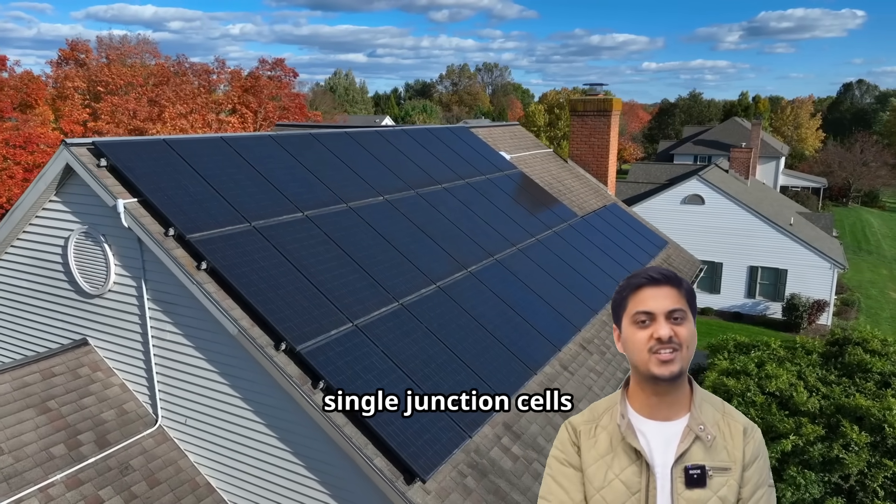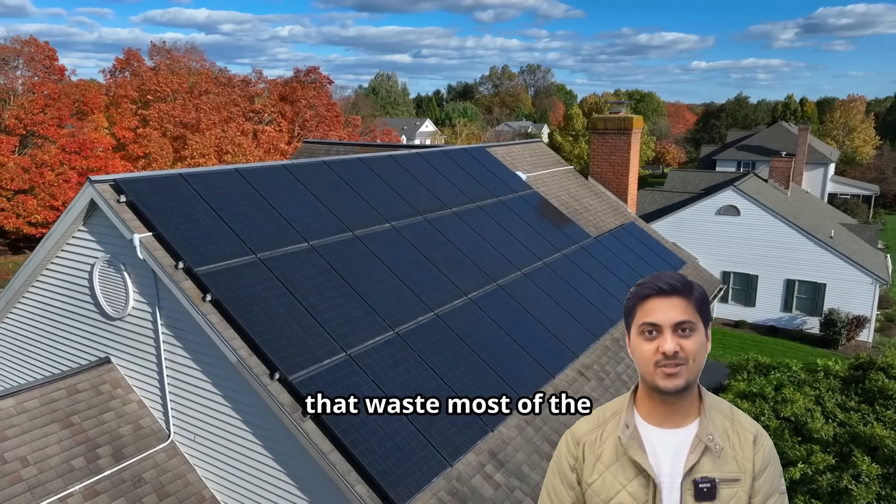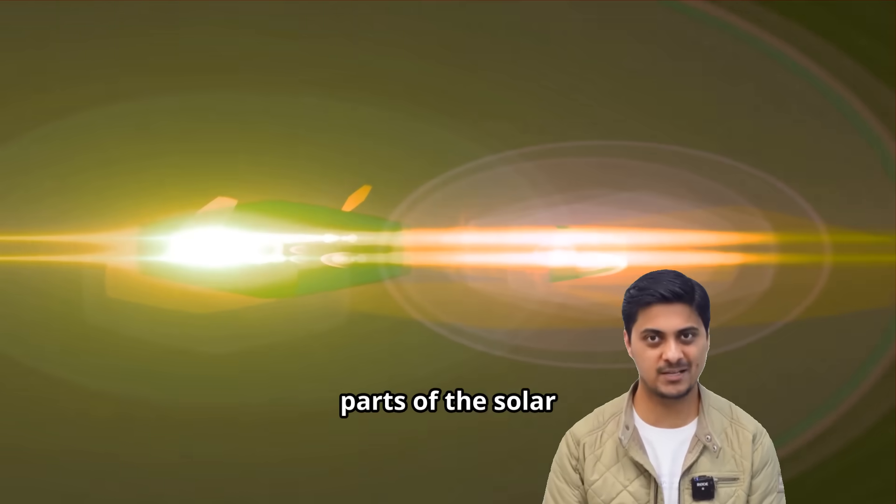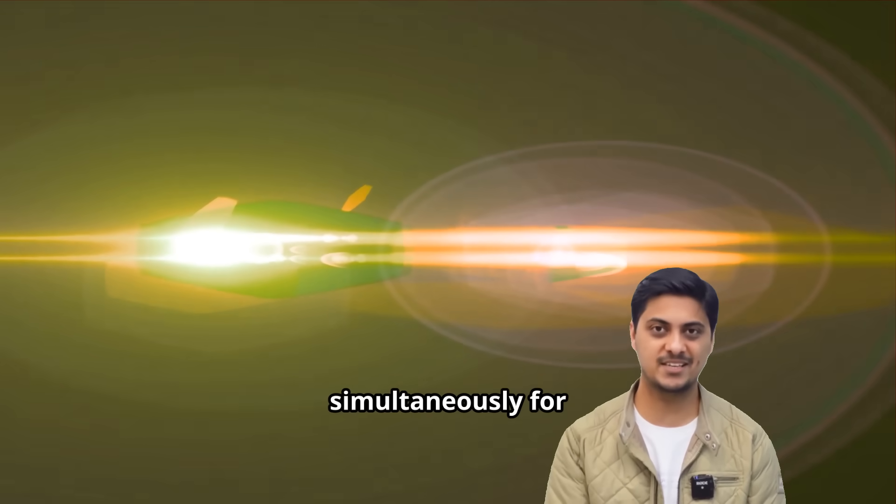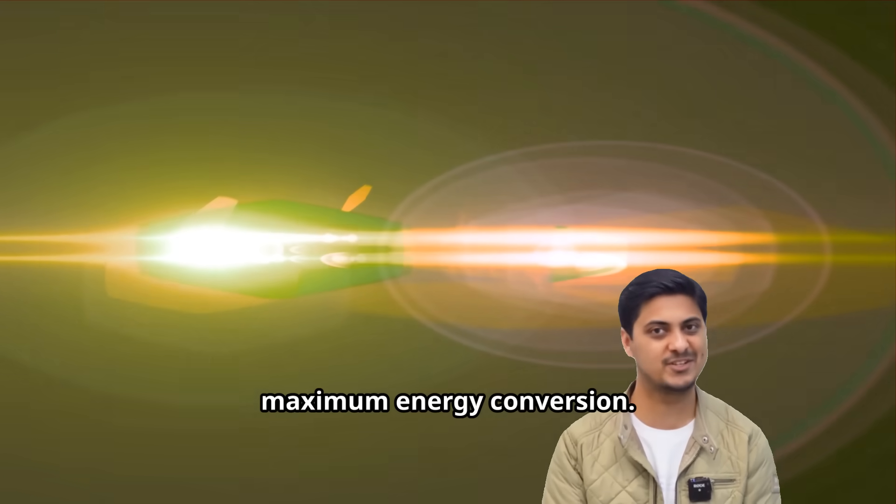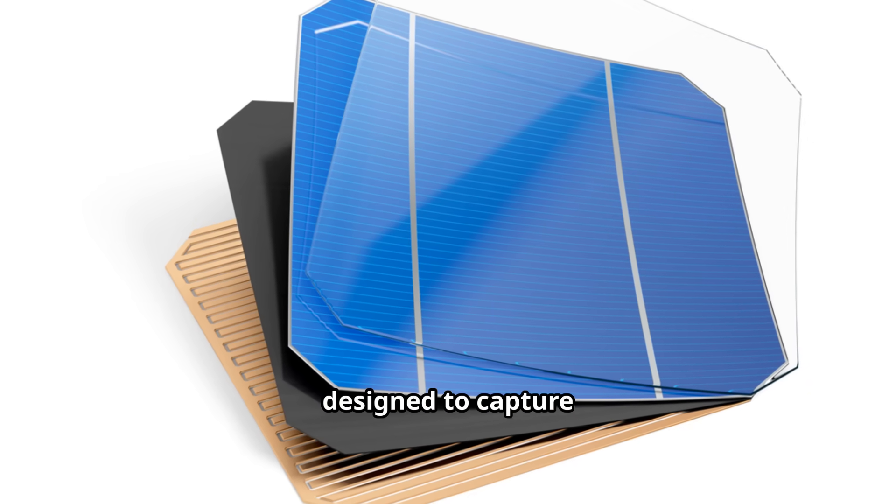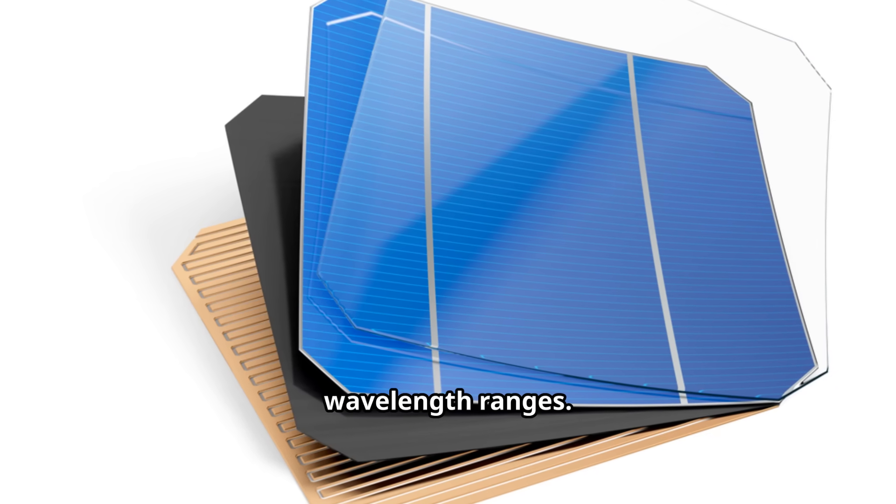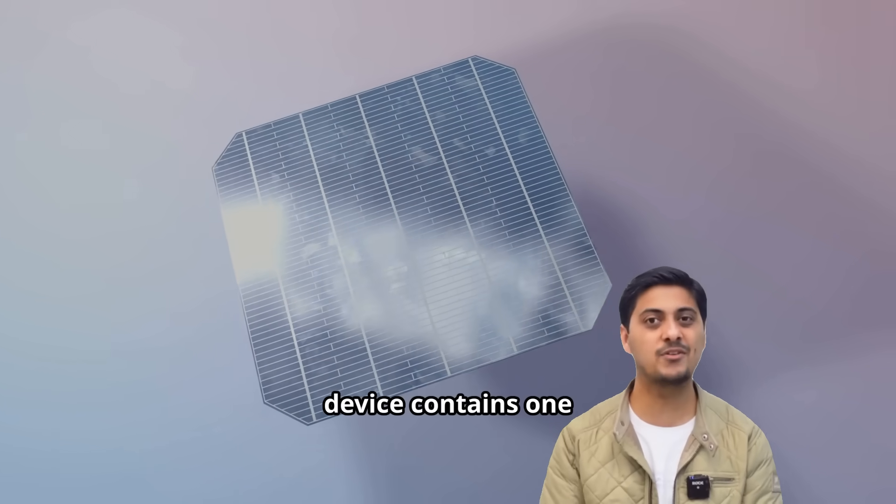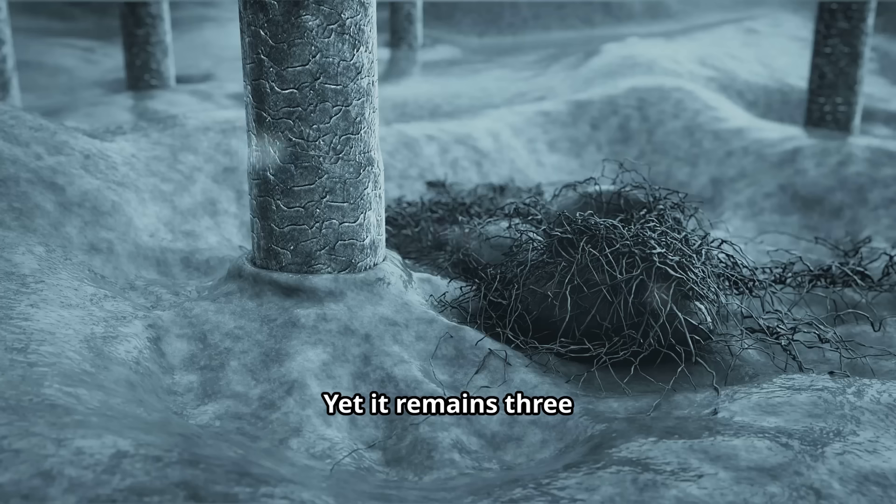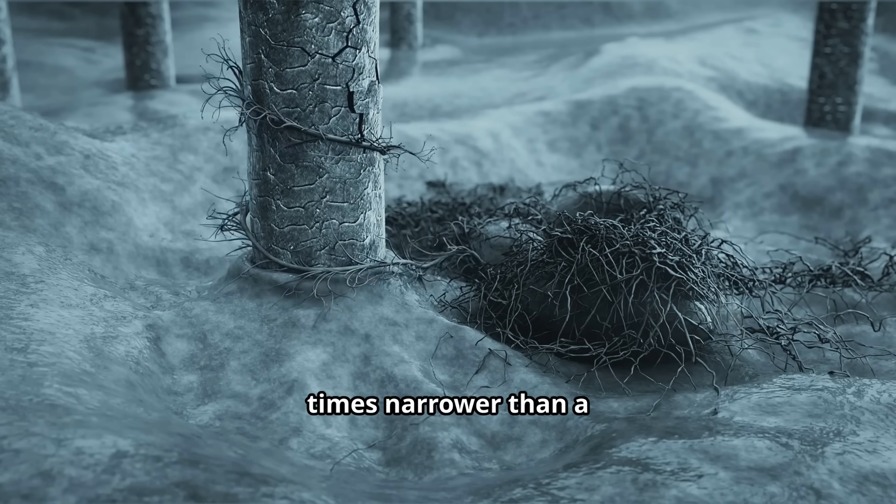Unlike traditional single-junction cells that waste most of the solar spectrum, multi-junction cells capture six different parts of the solar spectrum simultaneously for maximum energy conversion. Each of the six junctions is specially designed to capture light from specific wavelength ranges. This incredible device contains 140 total layers of various materials, yet it remains three times narrower than a human hair.